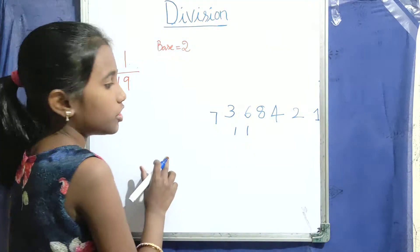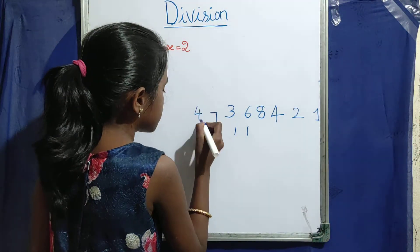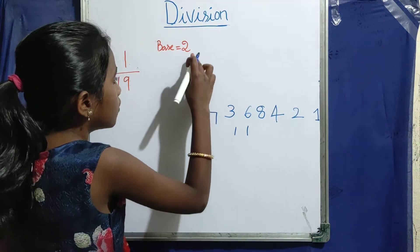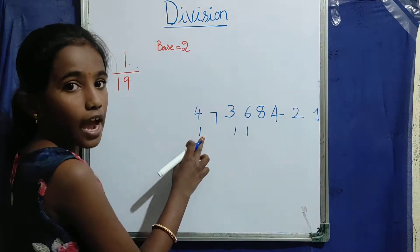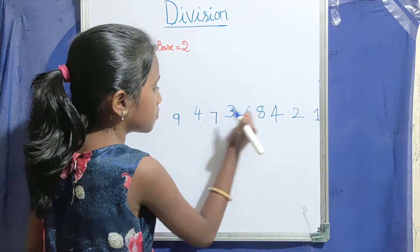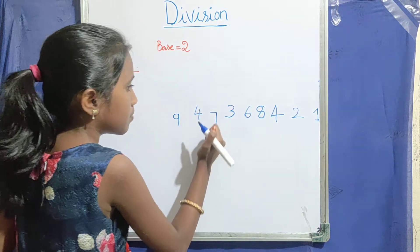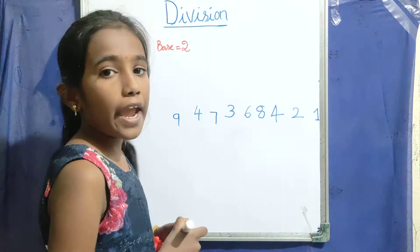7 twos, 14. 4 twos, 8. Plus 1, 9. 9 twos, 18.